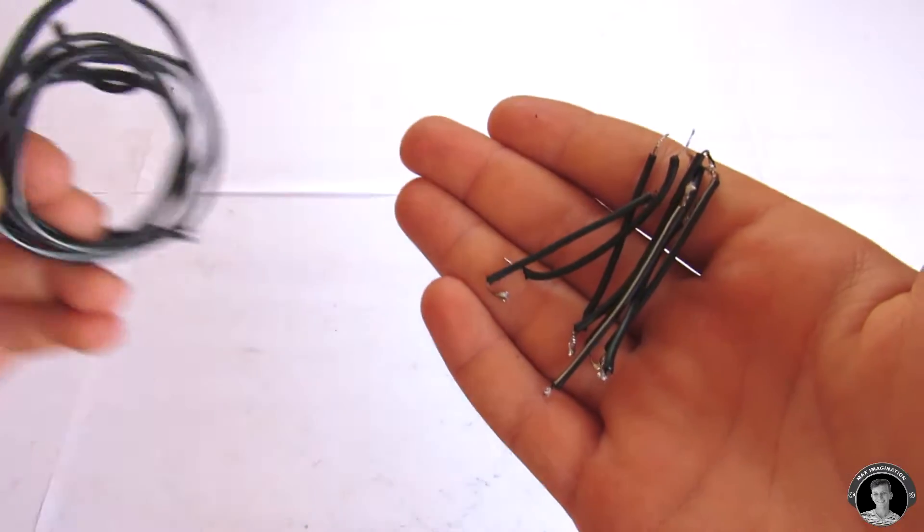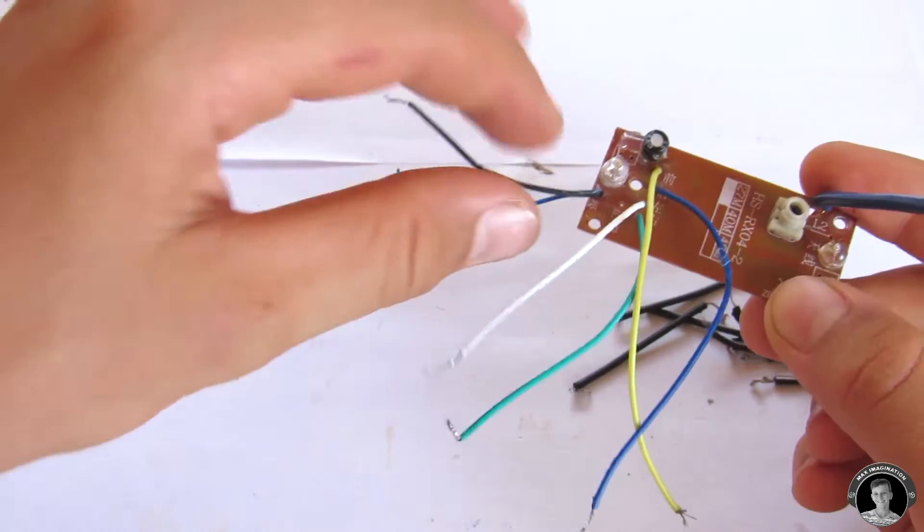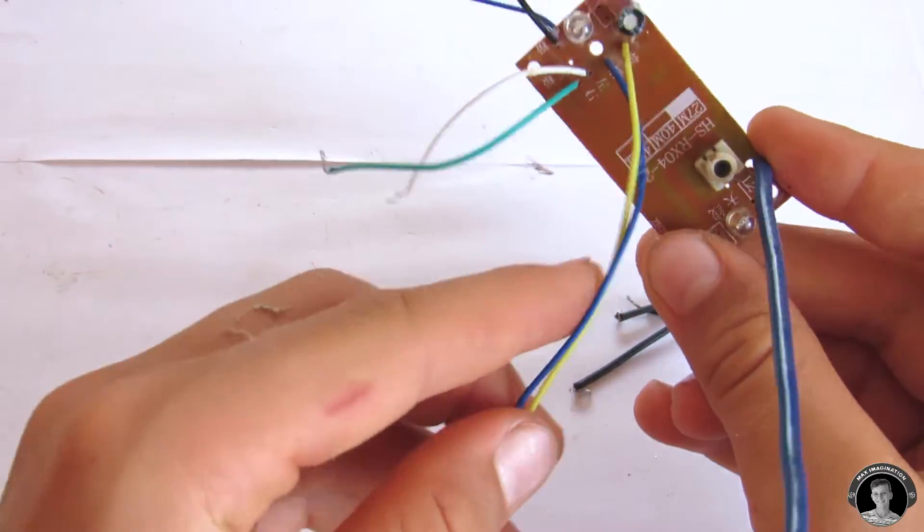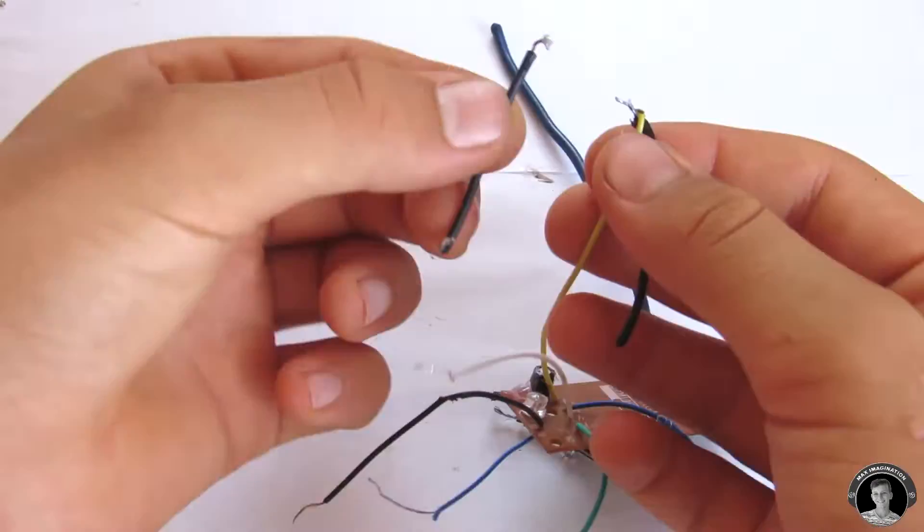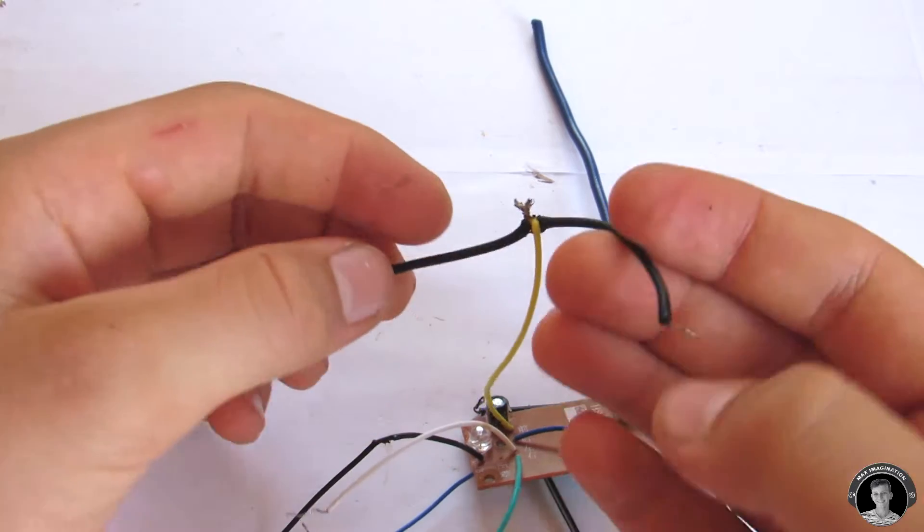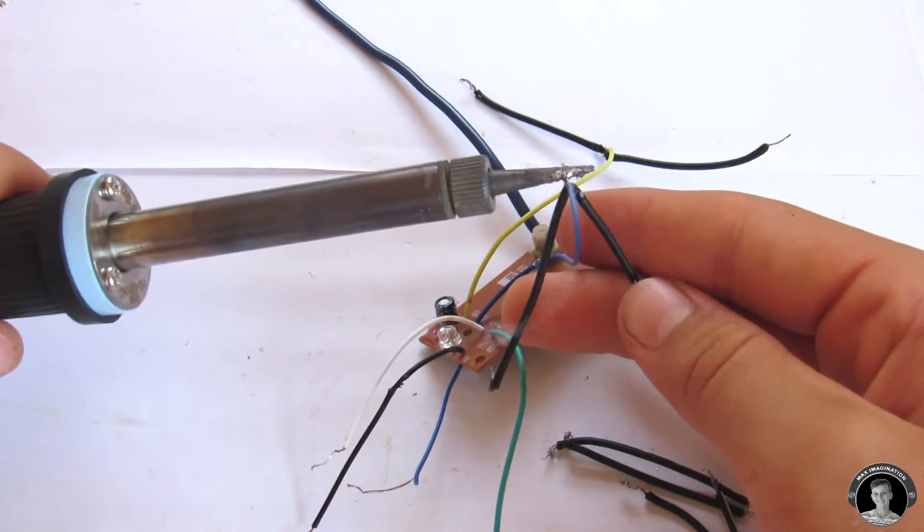These two wires go to your battery, these two are for turning, and these two for forwards and backwards. But we'll be wiring this thing up a bit differently for this vehicle since we'll be doing tank controls instead of a normal RC car.